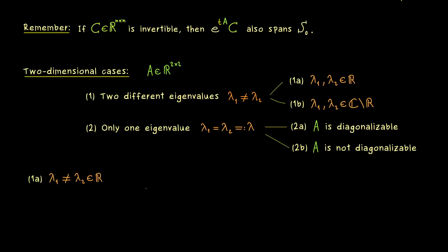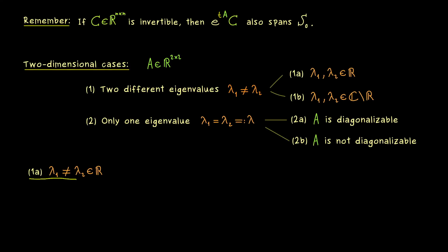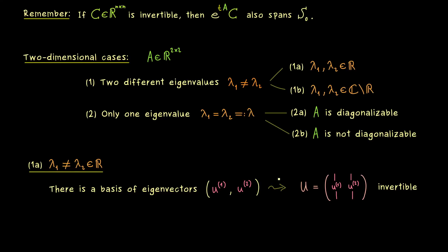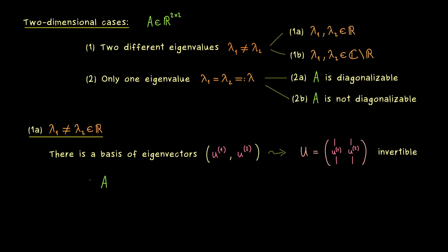Case 1A is the easiest — we've already discussed it a little. Matrix A is diagonalizable, meaning we find a basis of eigenvectors: u1 associated to eigenvalue lambda1, and u2 associated to lambda2. We put these into the columns of a transformation matrix U, which is invertible. Since the columns are eigenvectors, U transforms A into a diagonal matrix: U-inverse A U equals a 2-times-2 diagonal matrix with eigenvalues lambda1 and lambda2 on the diagonal.